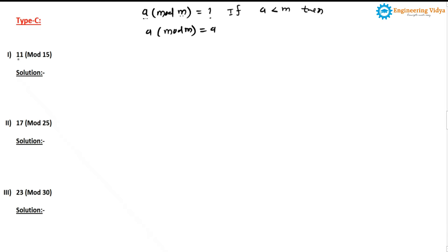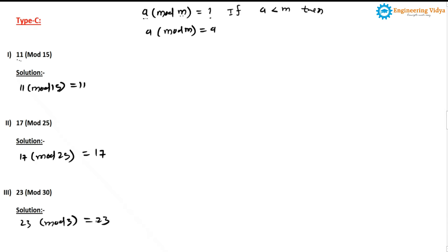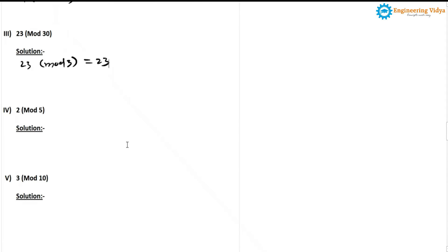In problem 1: the first operand is 11 and 11 is less than 15, so 11 mod 15 is simply 11. In problem 2: 17 mod 25 — the first operand is less, so the result is 17. In problem 3: 23 mod 30 — first operand is less, so the result is 23. In problem 4: 2 mod 5 — 2 is less than 5, so the result is 2. In problem 5: 3 mod 10 — 3 is less than 10, so the result is 3.